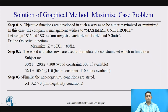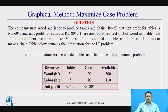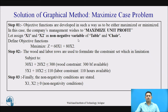The first step is to define the objective function. As we have seen, in this particular question the company is interested to maximize its profit. Here, x1 and x2 are the two non-negative decision variables for table and chair. The objective is: maximize Z = 60x1 + 80x2.